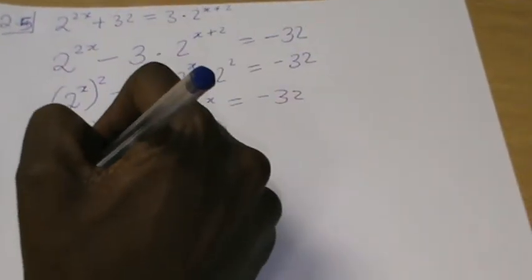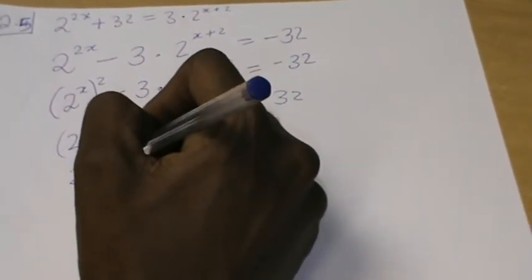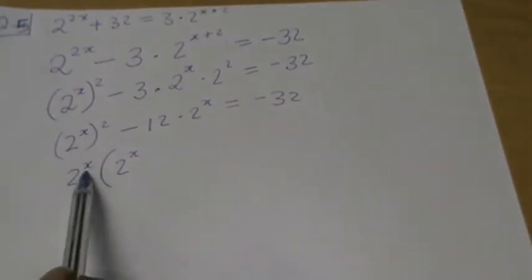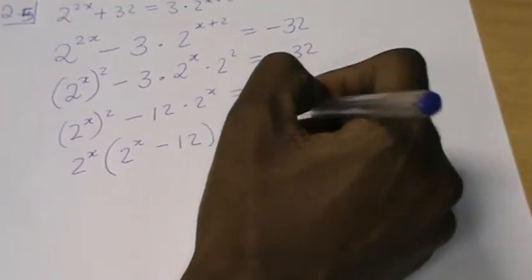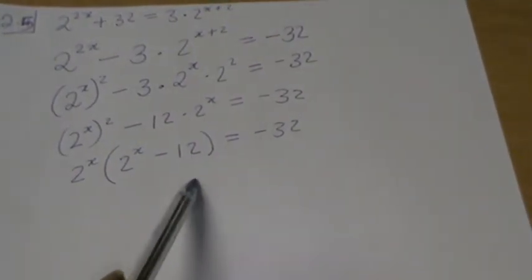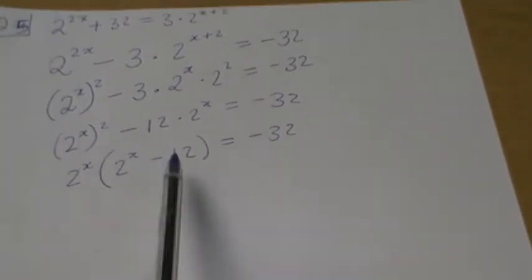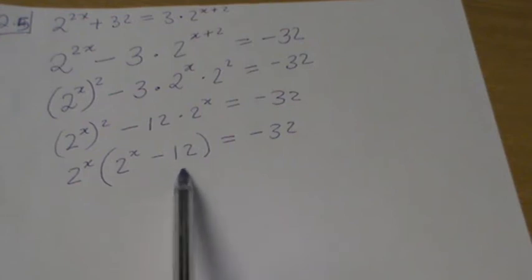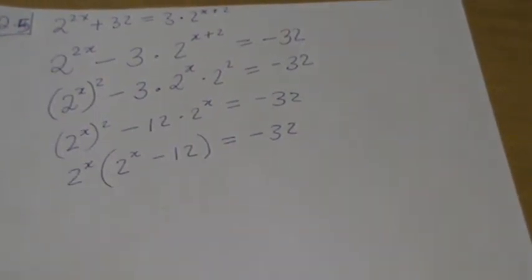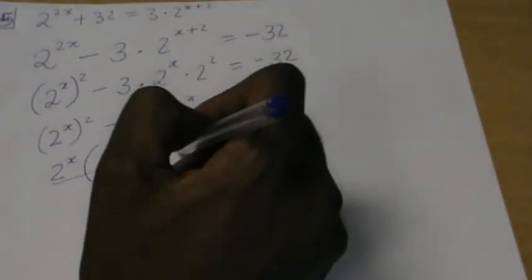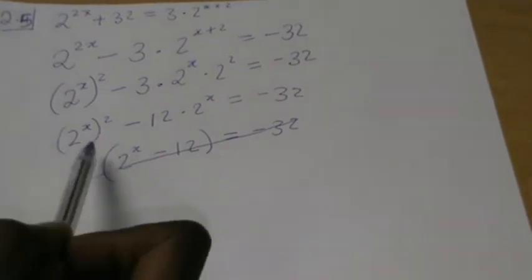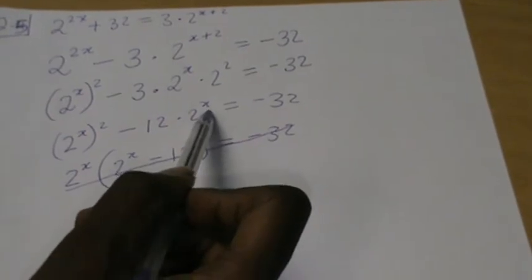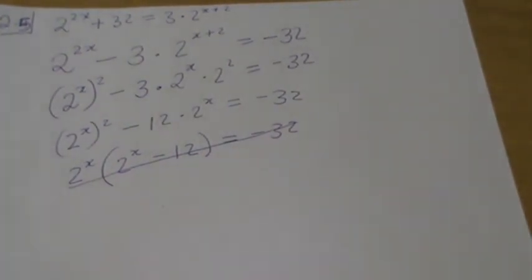We can try factoring out 2 to the power of x. That gives 2 to the power of x times (2 to the power of x minus 12) equals negative 32. But unlike the previous one, I cannot combine 2 to the power of x and 12 — they are not like terms. That's why I said this is a quadratic equation. I have 2 to the power of x squared, minus 12 times 2 to the power of x, and a constant, which is the classic quadratic form.